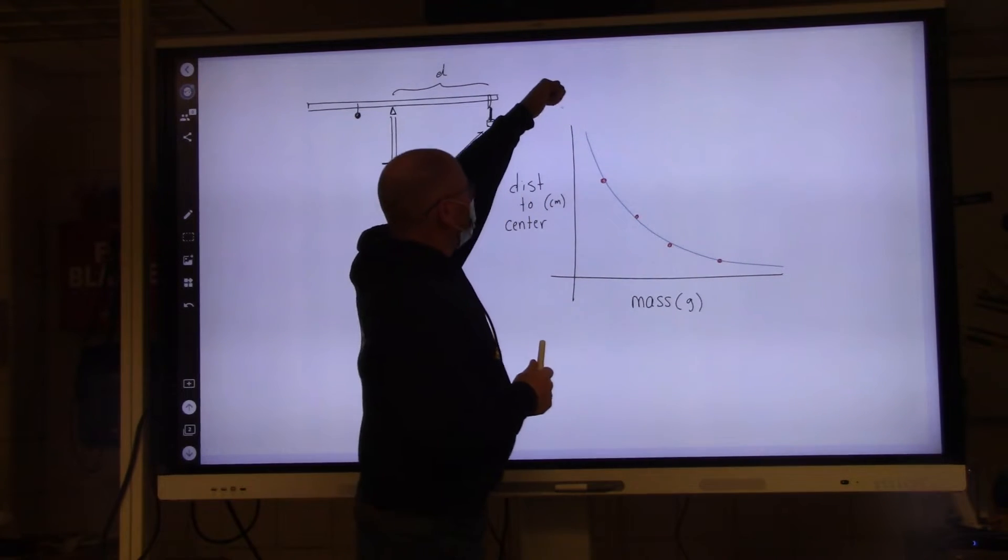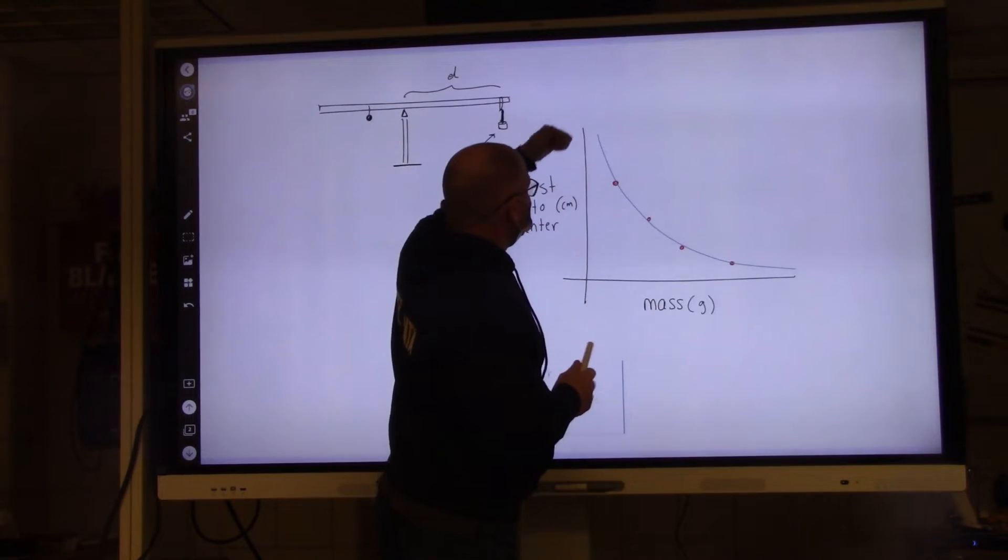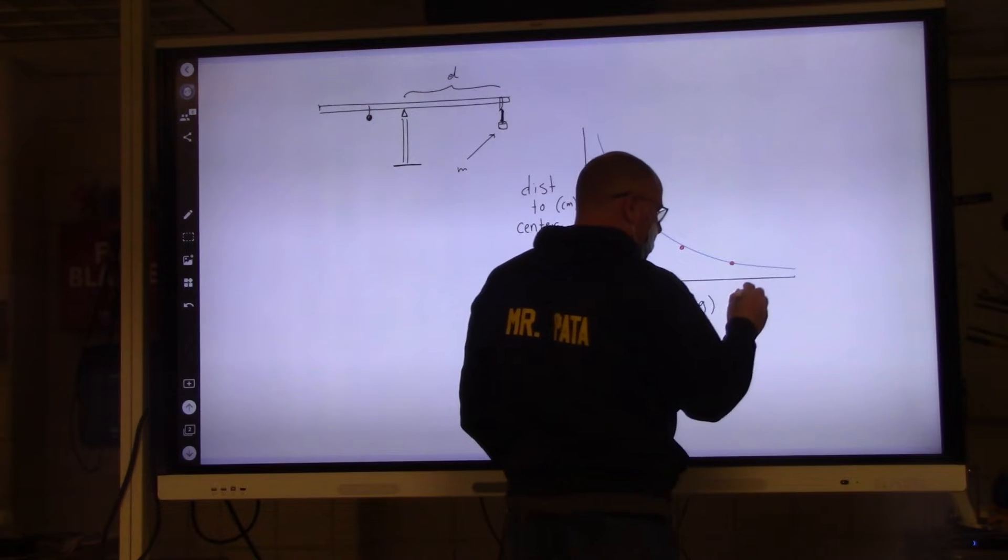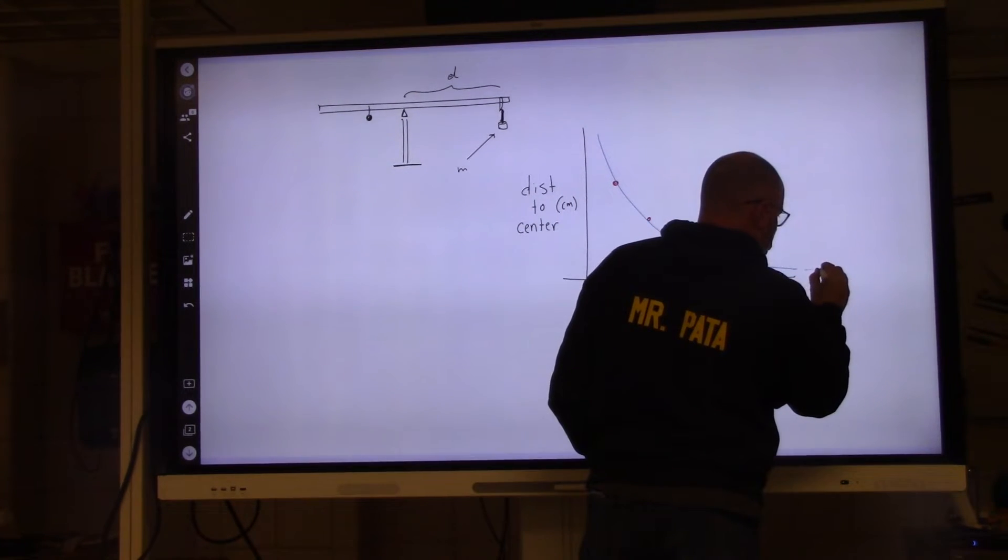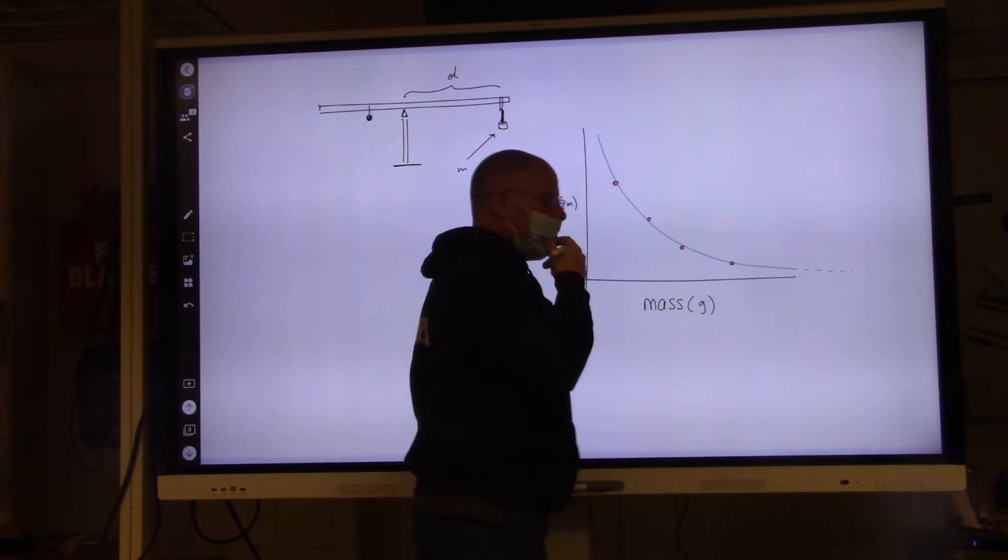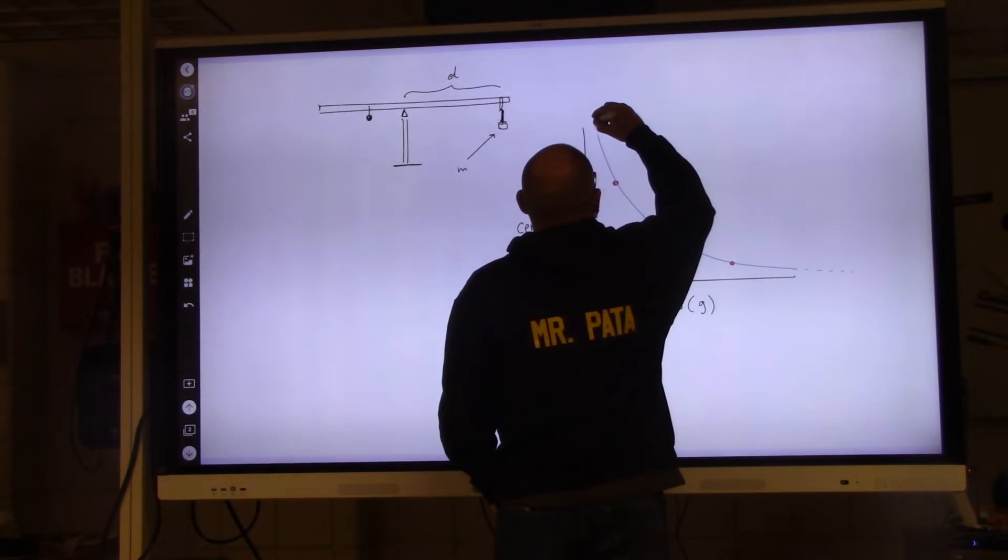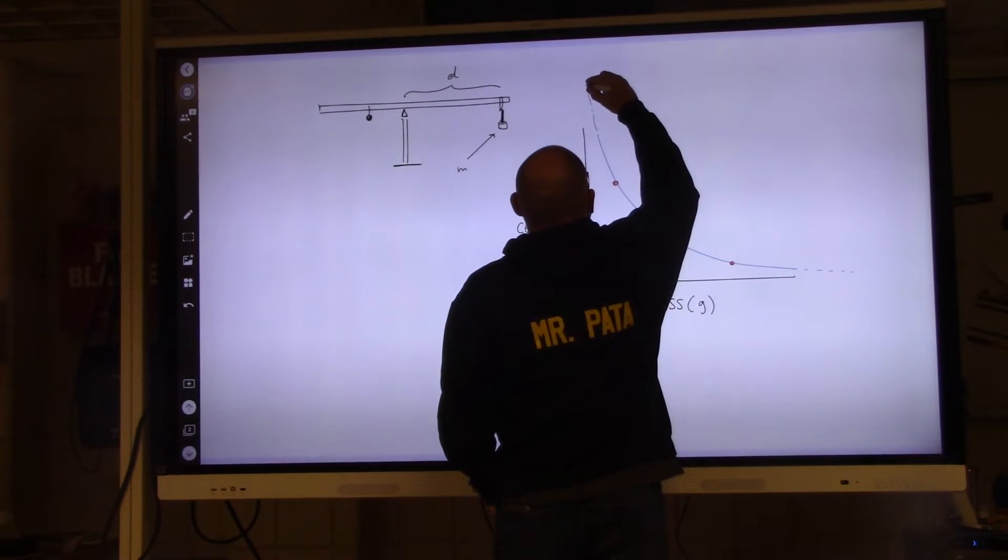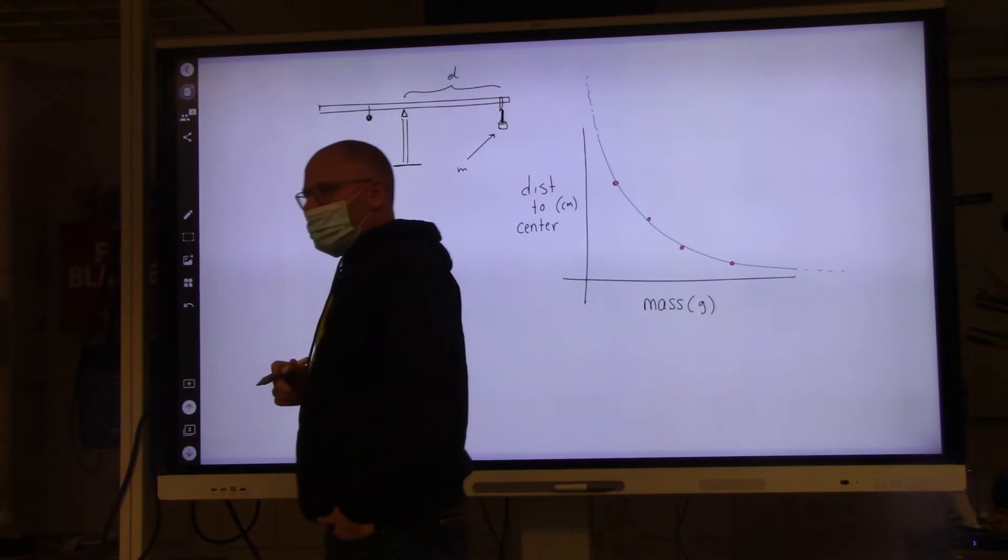So what that means is that this here approaches asymptotically, gets closer and closer, but doesn't touch. This also approaches asymptotically, gets closer and closer, but doesn't touch.